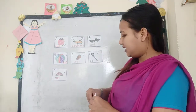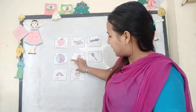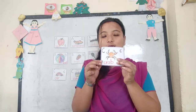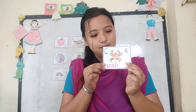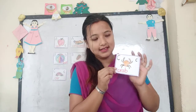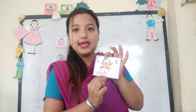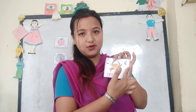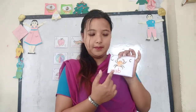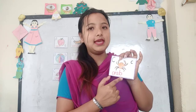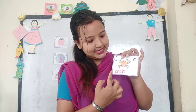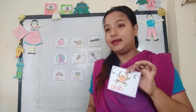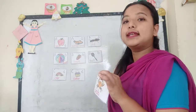C for car, C for cake, C for... Capital C, small c — C for crab. C-R-A-B, crab. C-R-A-B, crab. C-R-A-B, crab.